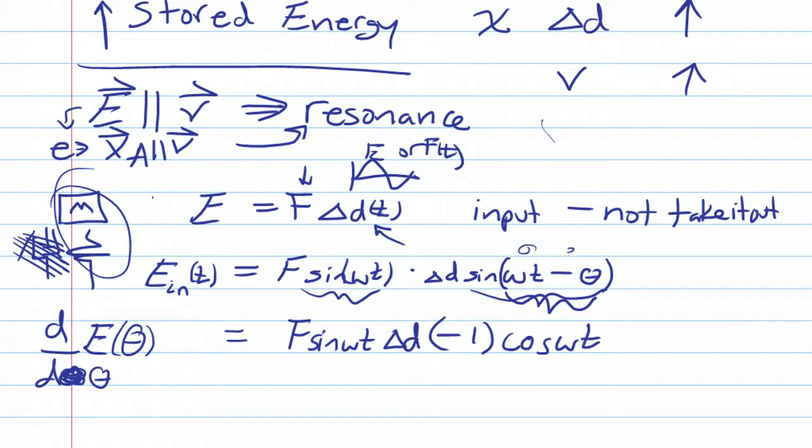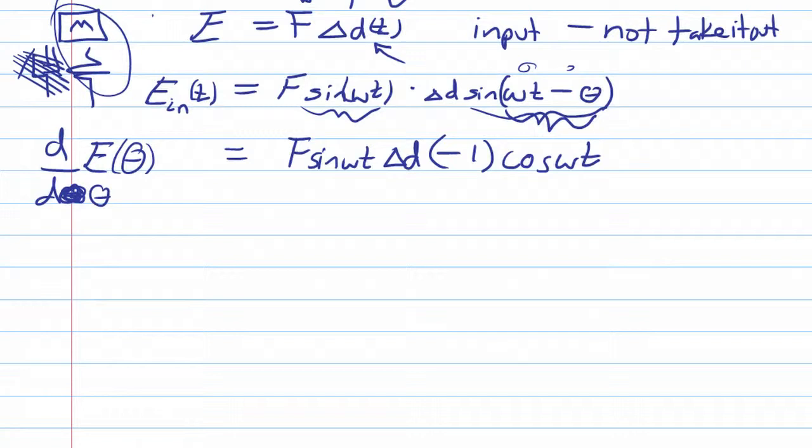Cosine omega t. So what we actually end up with is F delta D, which we don't really care about. We care about this part.